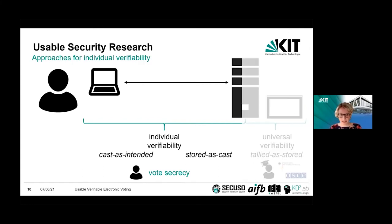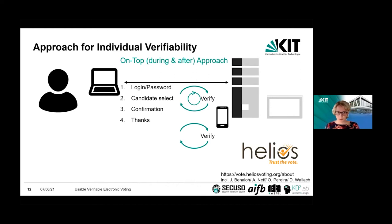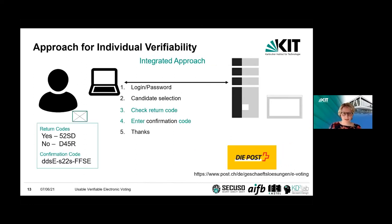For the rest of the talk I will focus on individual verifiability. There are a lot of proposals in the literature on how voters can conduct these two steps. I categorize them into three types: some where individual verifiability comes mainly after vote casting — as used in the Estonian voting system; others where verifiability comes both during and after vote casting — the most prominent being the Helios system; and a third category following a more integrated approach, as done by the Swiss Post for online elections in Switzerland.